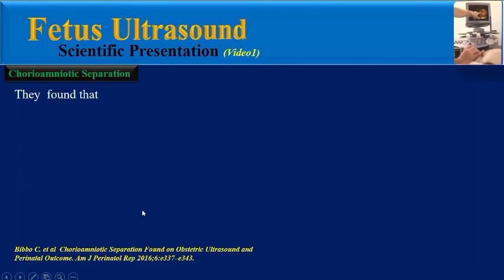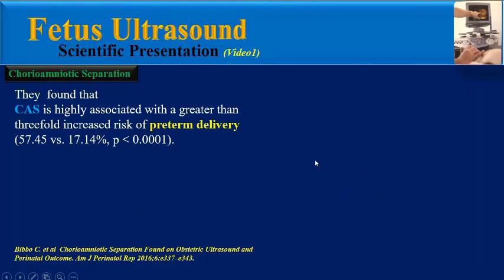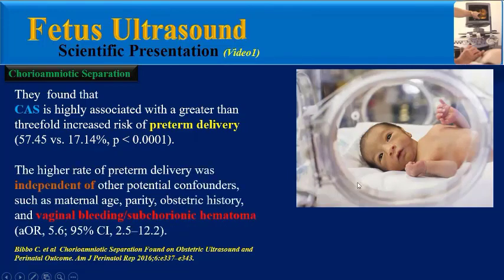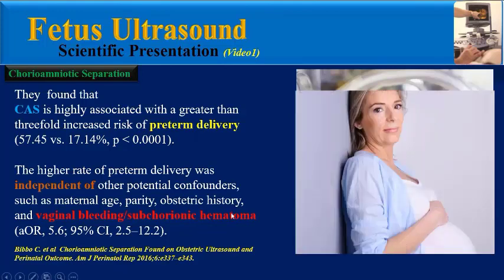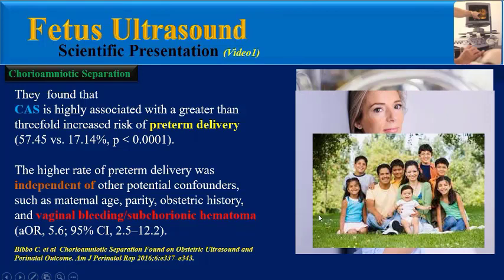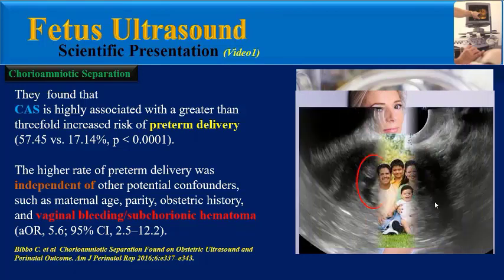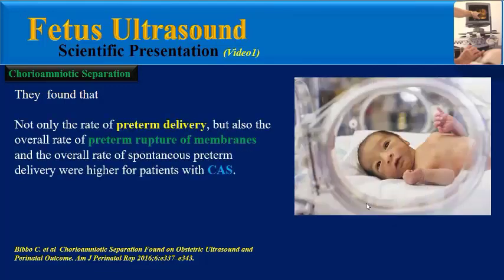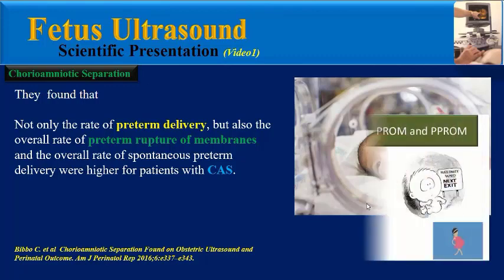They found that CAS is highly associated with a greater than three-fold increased risk of preterm delivery. The higher rate of preterm delivery was independent of other potential confounders such as maternal age, parity, obstetric history, vaginal bleeding, or subchorionic hematoma. Not only preterm delivery, but also the overall rate of premature rupture of membranes and spontaneous preterm delivery were higher in patients with CAS.